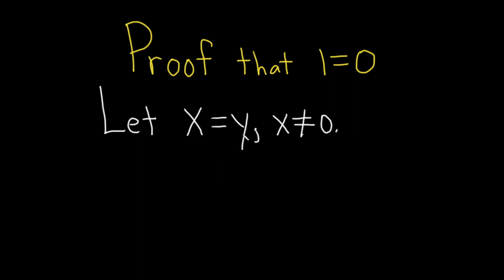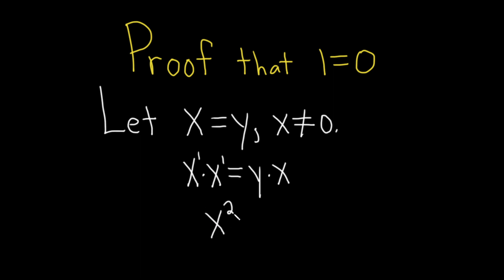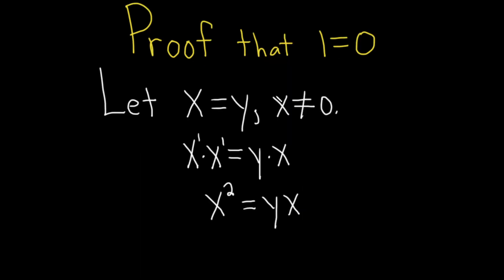So we have an equation x equals y, and when we have an equation we can multiply both sides by whatever we like. So let's multiply both sides by x. If I multiply the left hand side by x I get x times x, and on the right we get y times x. Using properties of exponents, x times x is x squared — you just add the exponents — so this is x to the second power, and over here this is just yx.